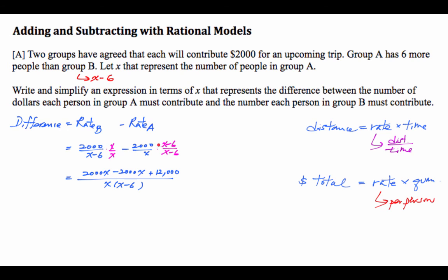In the second one, negative 2,000 times x gives you negative 2,000x. Negative 2,000 times negative 6 gives you 12,000. So 2,000x cancels, and we end up with this.